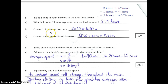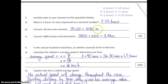The second part was convert 18 minutes into seconds. There are 60 seconds in one minute, so in 18 minutes there will be 18 times 60 seconds, which gives us 1,080 seconds. You must have the units here.